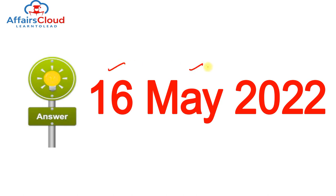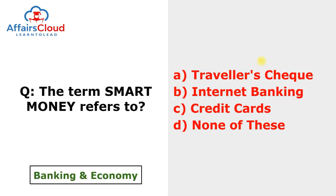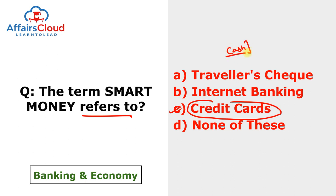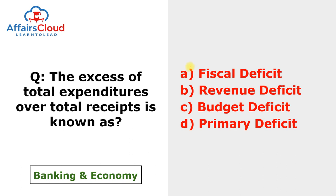Question of the Day (16th May 2022): The term 'smart money' broadly refers to credit cards, as credit cards allow borrowing money from a credit provider without using cash. Today's question of the day: 'The excess of total expenditure over total receipts is known as ___.' Please answer in the comment box below.